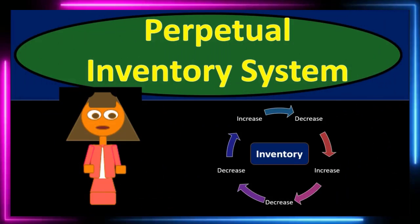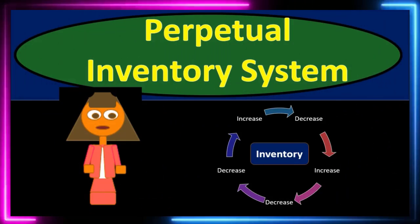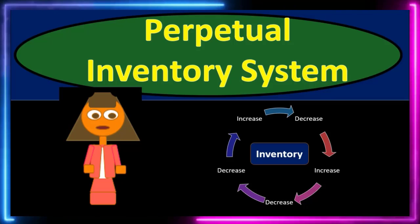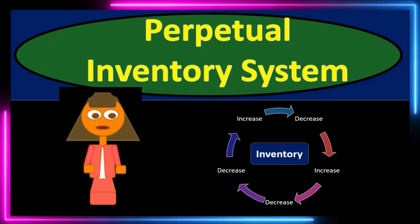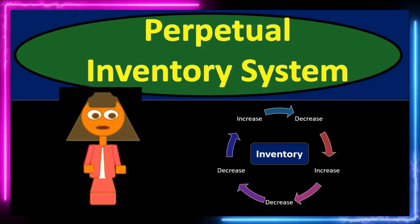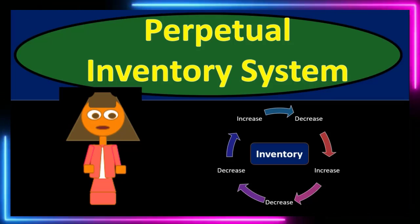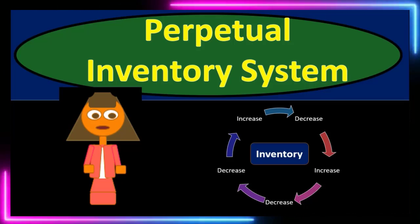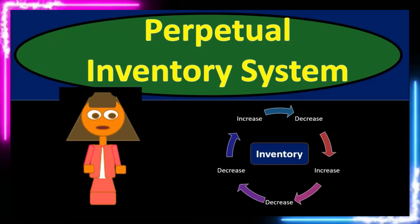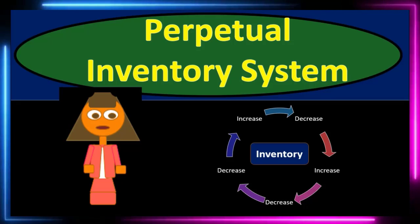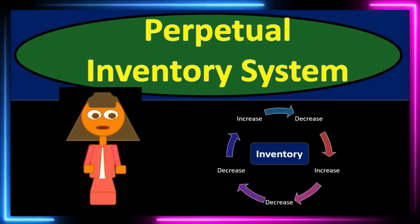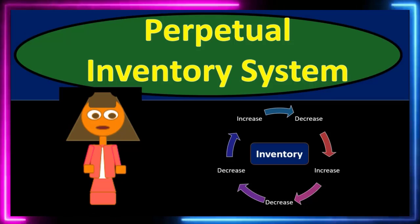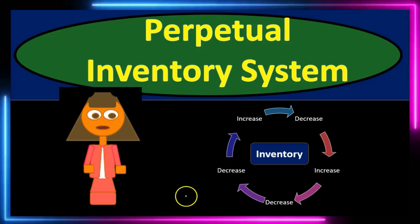In this presentation we will talk about a perpetual inventory system. The perpetual inventory system is the default system we will typically be talking about when referring to an inventory system, but we want to be able to compare and contrast it to a periodic system. One reason is that a periodic system is often used when we don't have a sophisticated system, and two, we're going to use a similar cost of goods sold calculation in both a perpetual system and a periodic system.